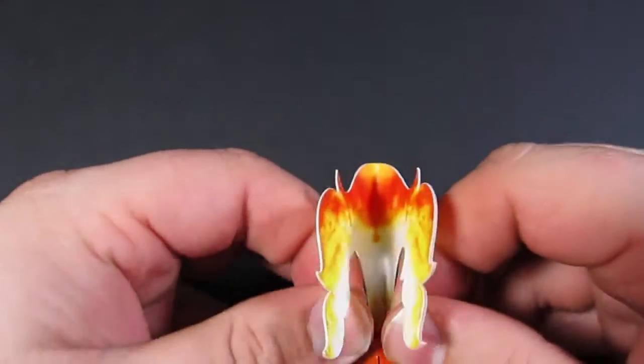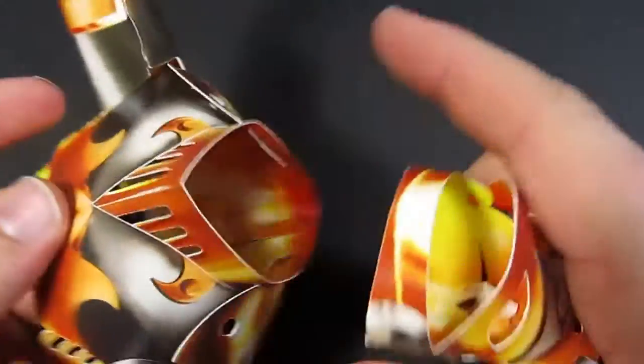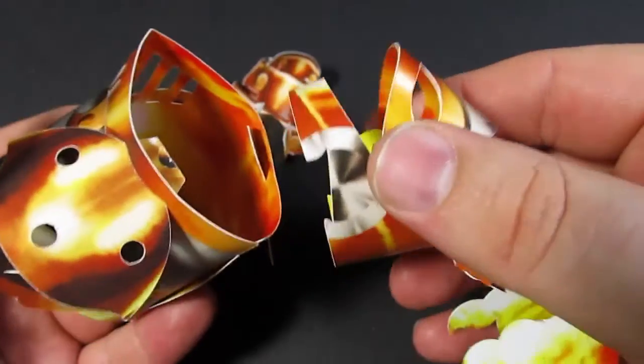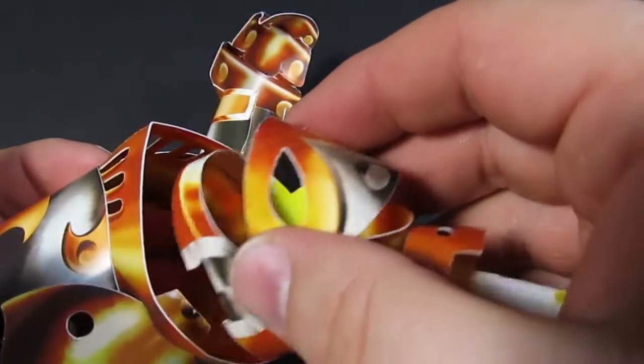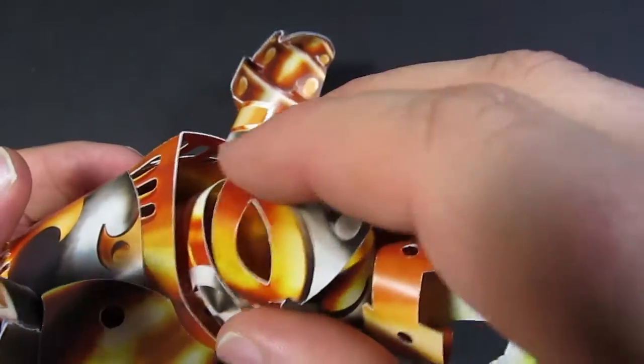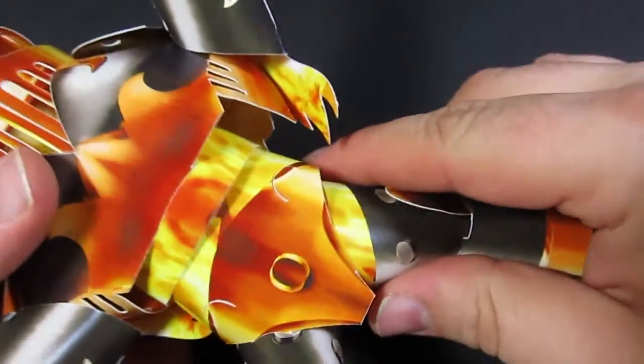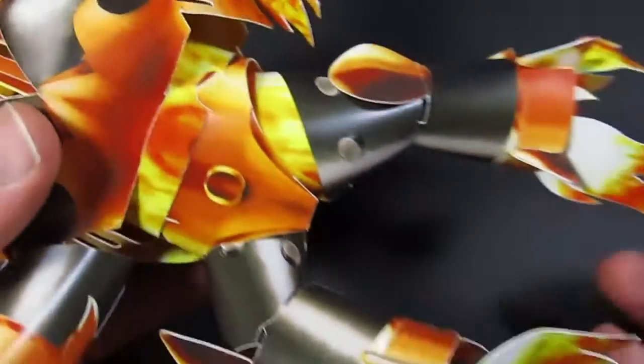The head is complete and all we need to do is attach it to the body. To attach it to the body, take the head and give a little squeeze and line up these notches with the tabs on the inside of the body. And there we go. The top half of Blast Zone is complete. Just insert the bottom half into it and you have completed Blast Zone's body.